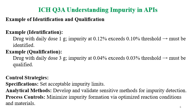For identification, an example: a drug with a daily dose of 1g has an impurity at 0.12%, which exceeds the 0.1% threshold, so it must be identified. For qualification, a drug with a daily dose of 3g has an impurity at 0.04%, which exceeds the 0.03% threshold, so it must be qualified.